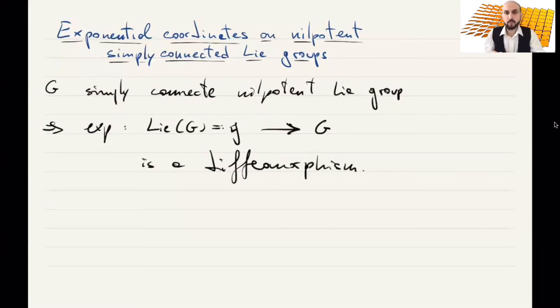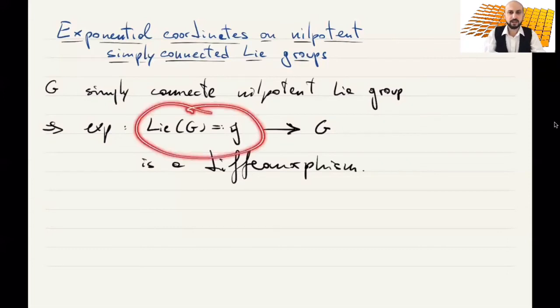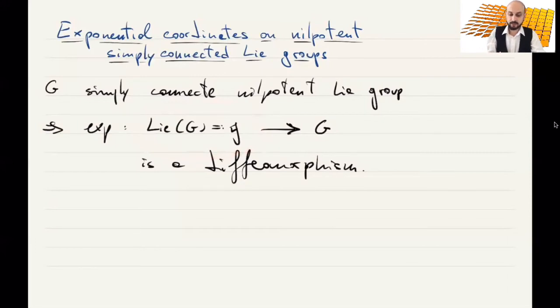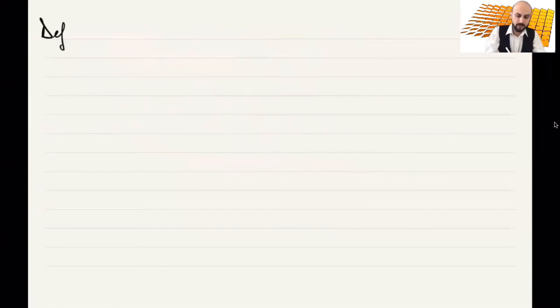We will use this fact to put coordinates, because this Lie algebra is just a vector space. So we can fix a basis and identify this space as some ℝⁿ. So let's define exponential coordinates.